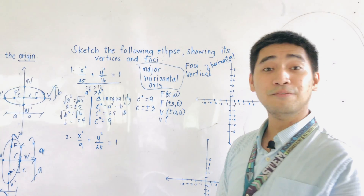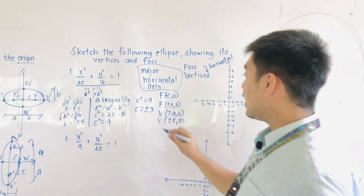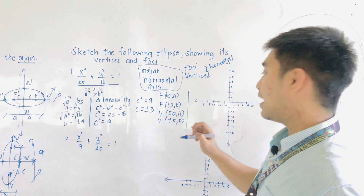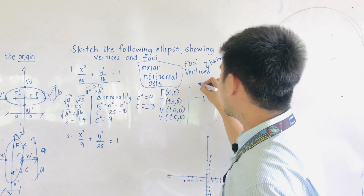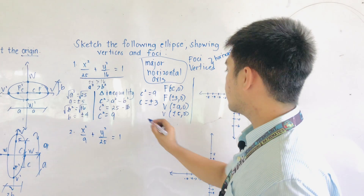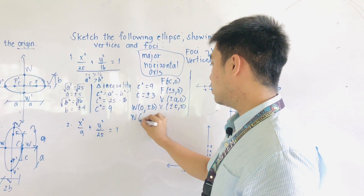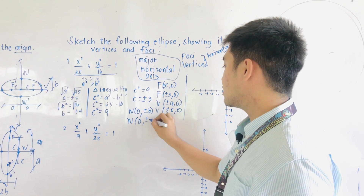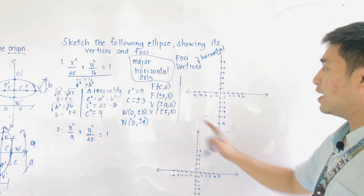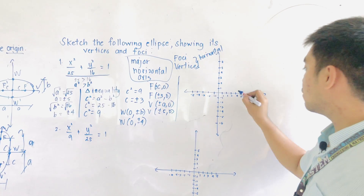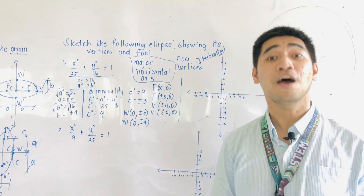We're now ready to graph. Plotting the foci at (±3, 0): this is our F and this is our F prime — together they are called the foci. The vertices are at (±5, 0): positive 5 is V and negative 5 is V prime.